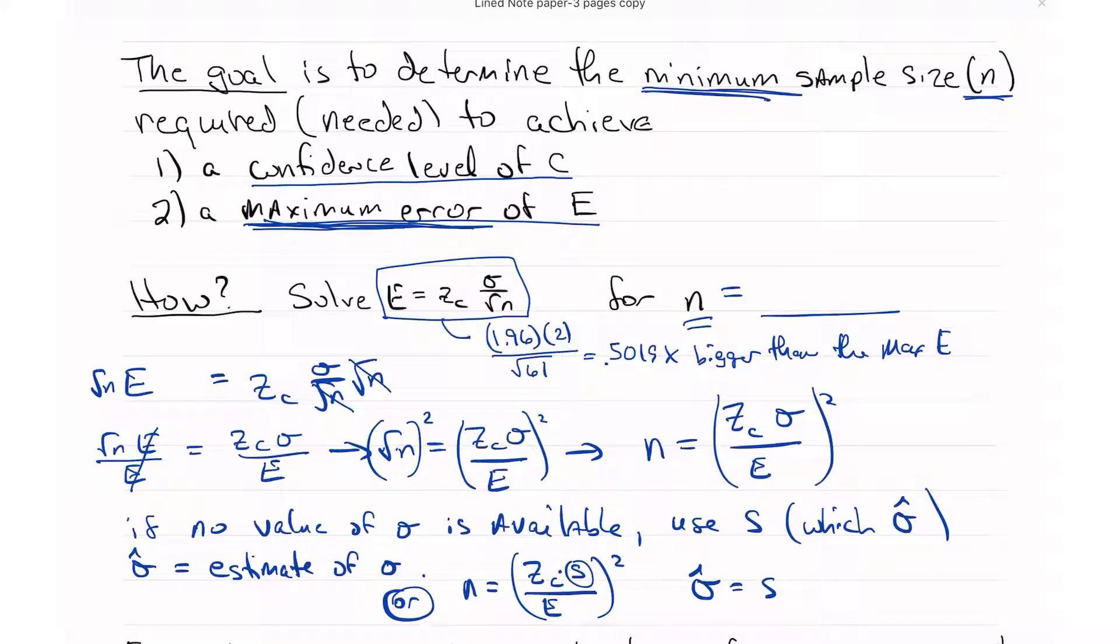Remember that the requirement is that this value of E is the maximum that I can take. It's the maximum amount of error that I'm willing to accept. Now if I take 1.96 times 2 divided by square root of 62, I get 0.4978, which is less than 0.5, and that is okay.